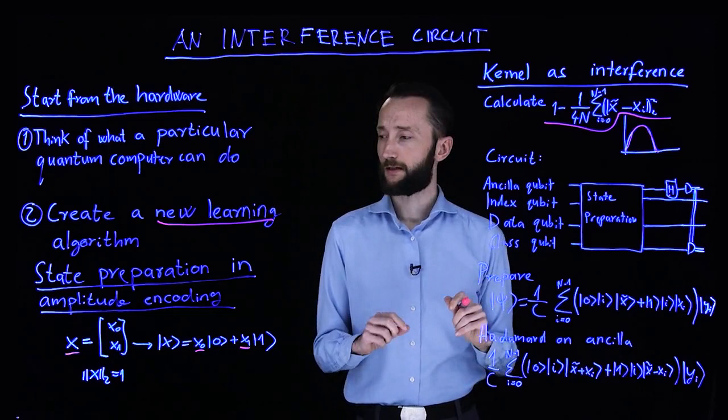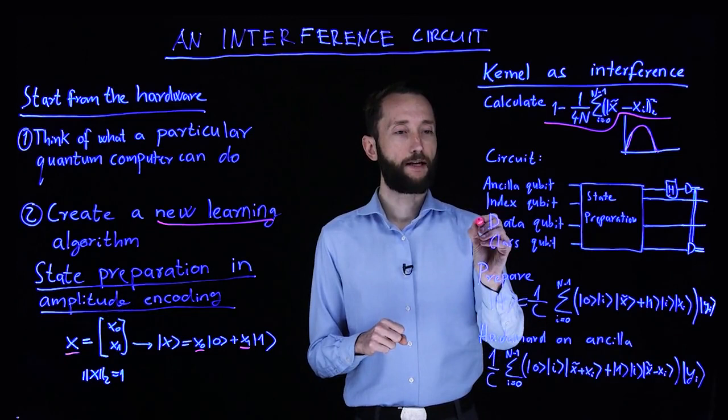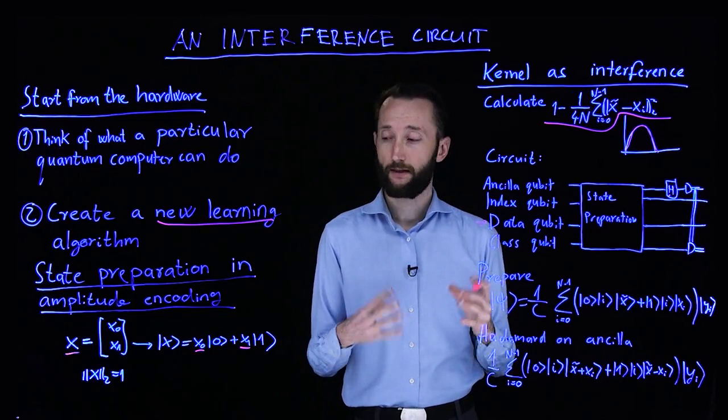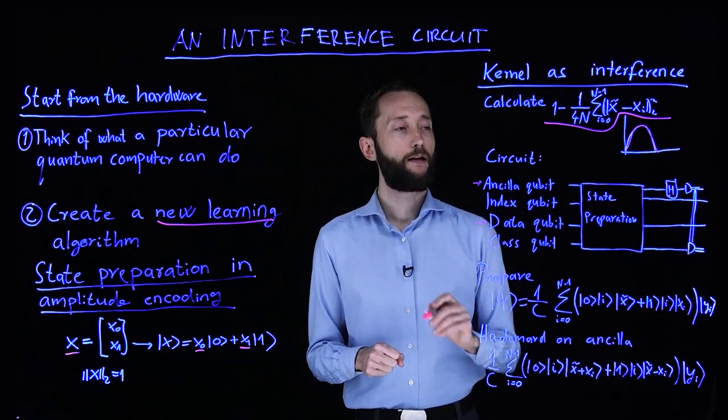So the circuit that we are going to need, assuming that our data set is only two-dimensional, is the following. We have a data qubit. Every single data point is actually going to be encoded in this single qubit. So this superposition is going to be interesting.